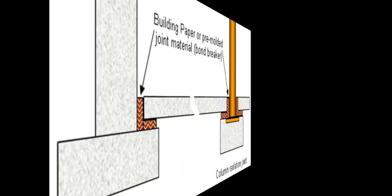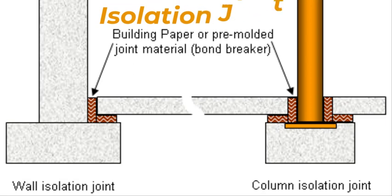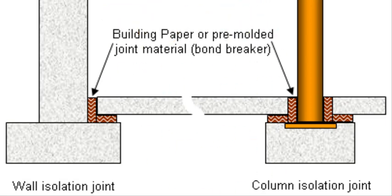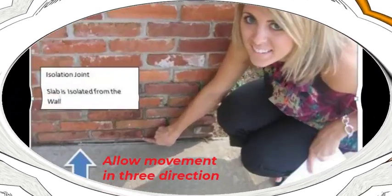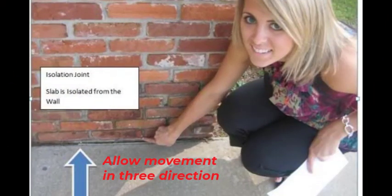An isolation joint is a separation between adjacent unsymmetrical sections of a concrete structure, to allow relative movement in between.